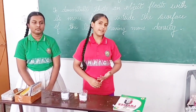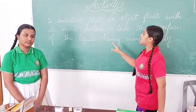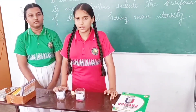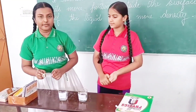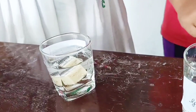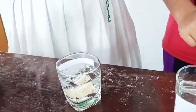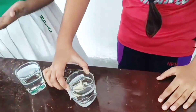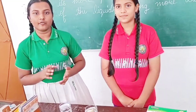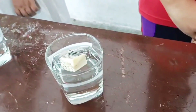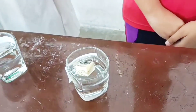Good morning everyone. Today we are going to perform an activity: an object floats with a small proportion outside the surface of a liquid having more density. This is glycerine and this is water. Glycerine has more density than water. When we dip an object into the water, it will float below the surface of the water.